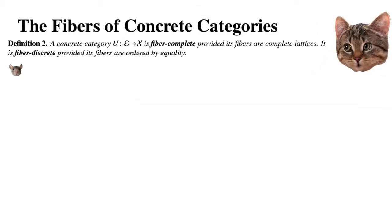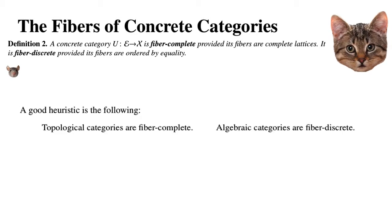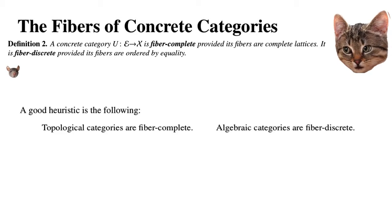We give another definition: a concrete category U: E → X is fiber-complete provided its fibers are complete lattices. It is fiber-discrete if the fibers are ordered by equality. A good heuristic is to remember that topological categories are fiber-complete and that algebraic categories are fiber-discrete in general.